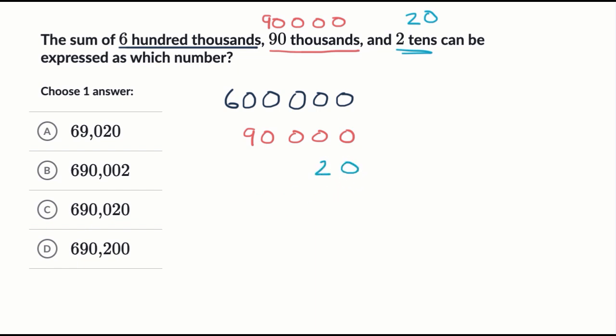Another way you could think about everything we're doing here is this first column, that's your ones place. That second column, I'm using a darker color, that's your tens place. Your third column is your hundreds place. This fourth column is your thousands place. This is your 10,000's place. And then this one is 100,000's place.